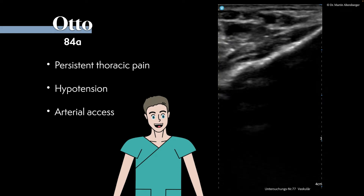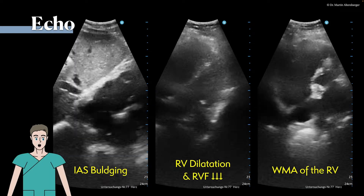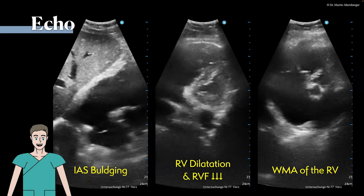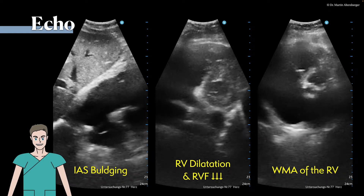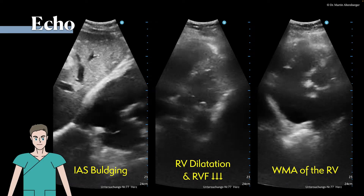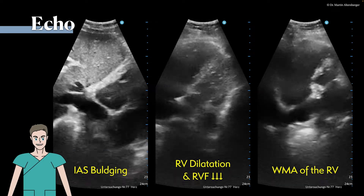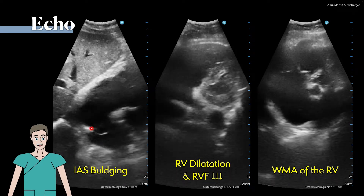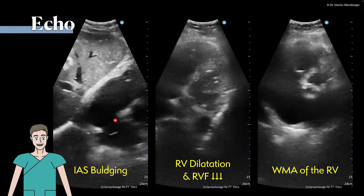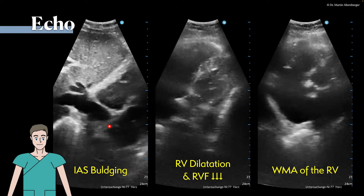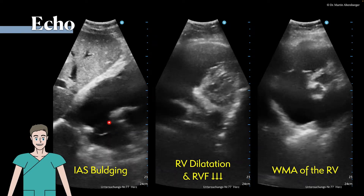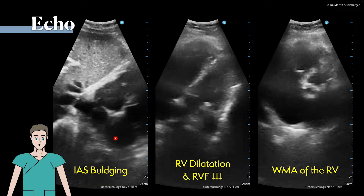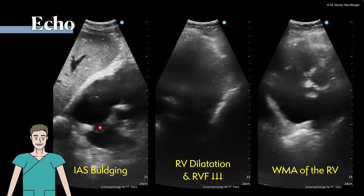Why is Otto feeling bad? We performed a point-of-care ultrasound, and in this echocardiographic exam we can see that in these subcostal images we have an interatrial septum which is bulging from the right side towards the left side.